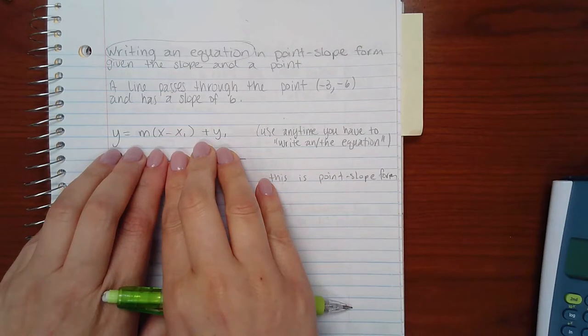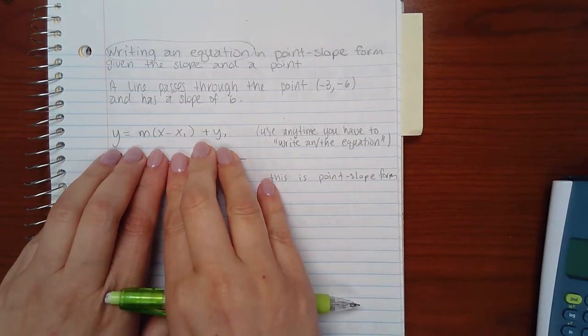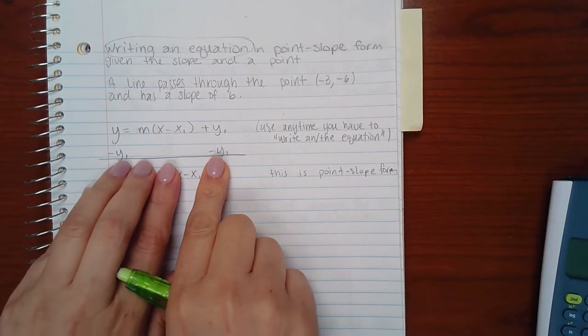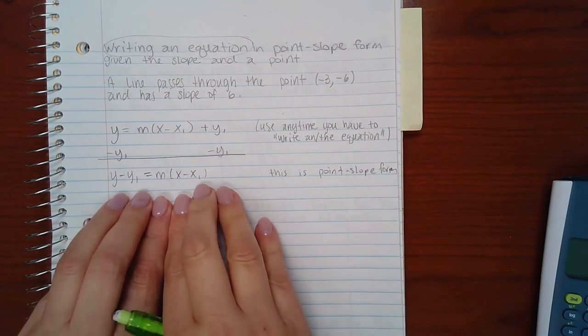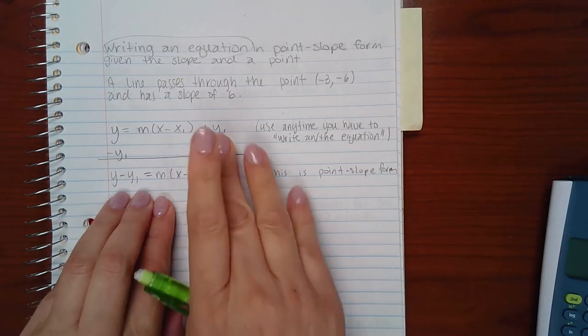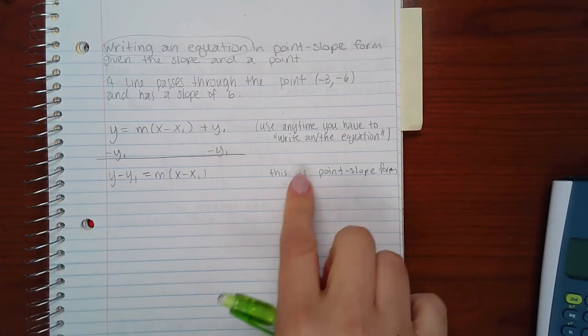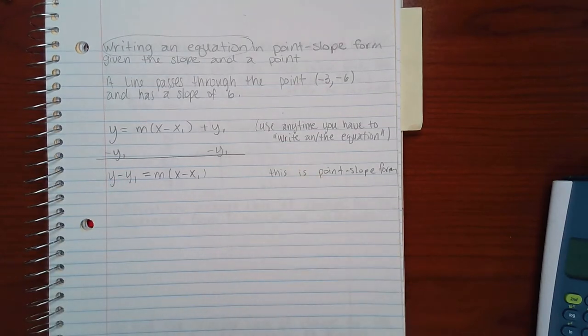But it says that it wants us to give the answer in what's called point-slope form. If you take this equation and you subtract the y1 on both sides, you end up with an equation that looks like this. It'll now be gone from this side and you'll have y minus y1 on the left side. That is the point-slope form. So we're essentially using the same equation to give them the equation of the line, except we manipulate it a little bit so that it's in that point-slope form.